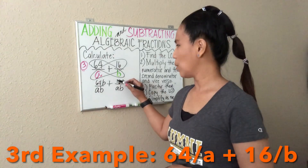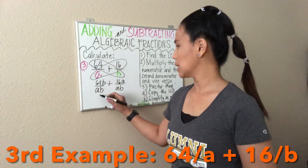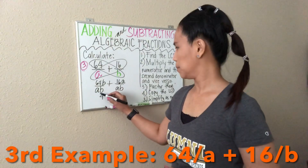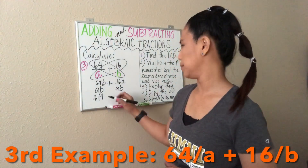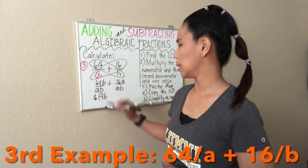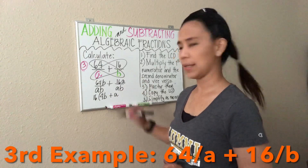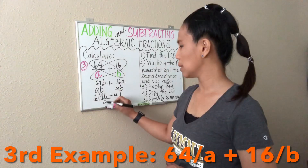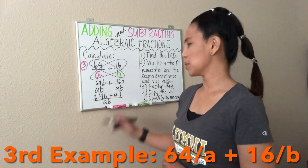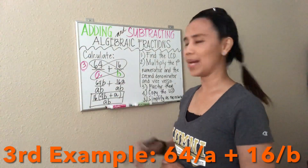So 16 divided by 16 is exactly 1, and 64 divided by 16 is exactly 4. So we have 16 as the common factor, times 4 gives us 64 — that's why we've got 16 and 4. We copy the variable B, adding that with 16 divided by 16 equals 1, so we just write A. Then we copy the LCD, which is AB. We cannot simplify further, so the final answer is 16 times (4B plus A) over AB.